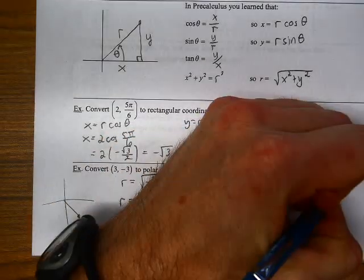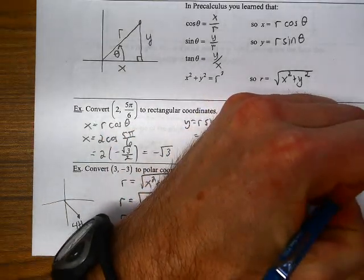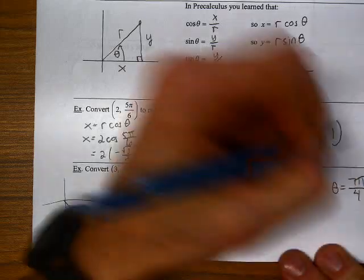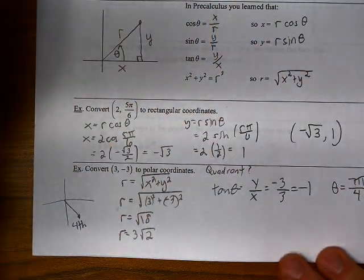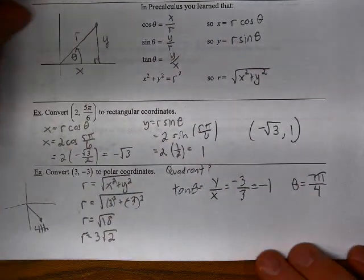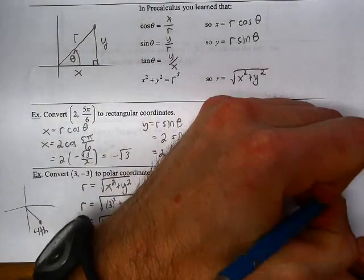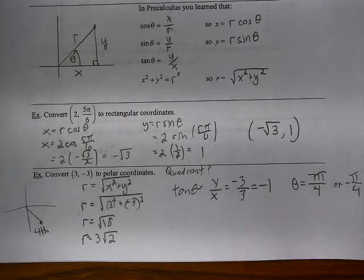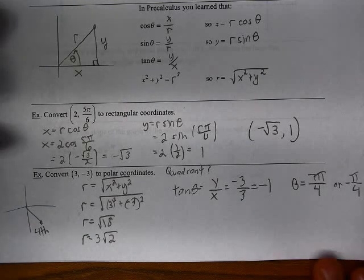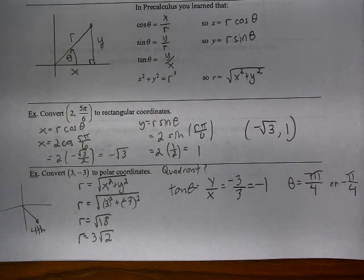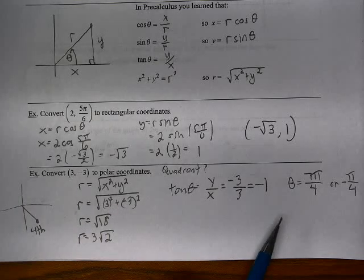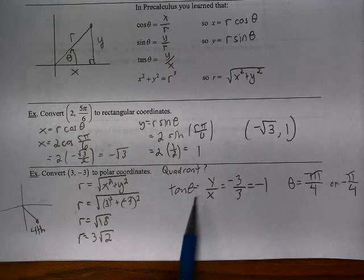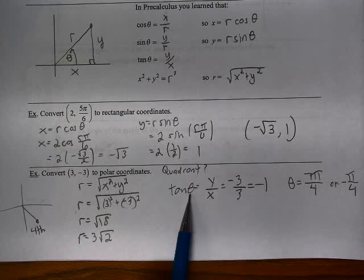And so that will happen when we have 7π/4, or we could call that negative π/4. So that puts us in the proper quadrant. We could also get an angular measurement that was in the second quadrant for which this would also be true. We'd also have tan θ equals negative 1. So we need to be careful about that.